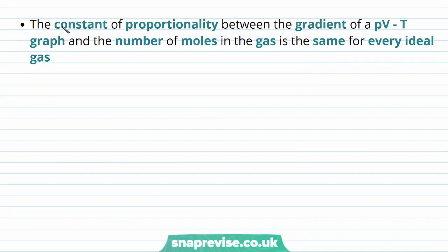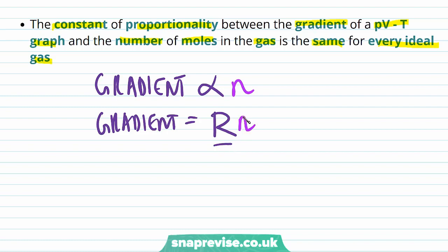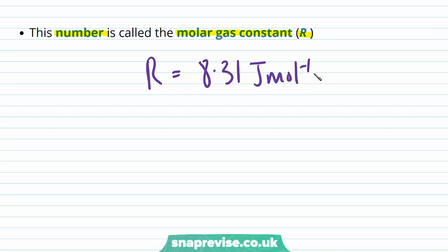We're now going to think about the constant of proportionality between the gradient of a pressure-volume against temperature graph and the number of moles in the gas. It turns out it's the same for every ideal gas. We can say that the gradient is equal to the constant of proportionality R times the number of moles n. This constant is called the molar gas constant R, and its value is 8.31 joules per mole per Kelvin.